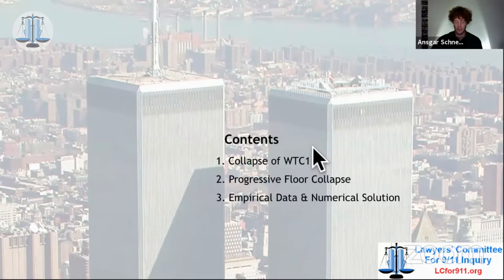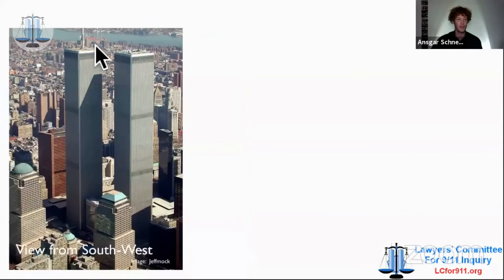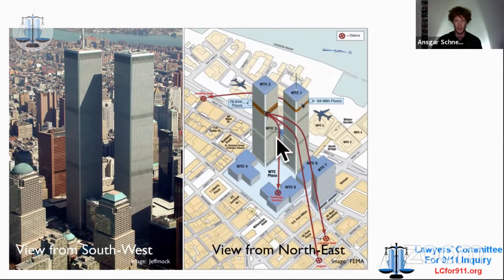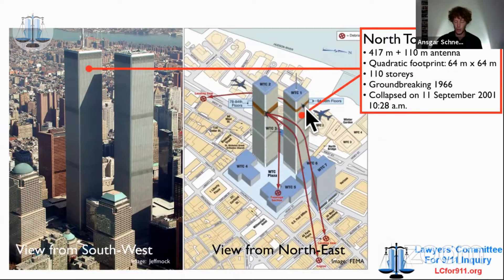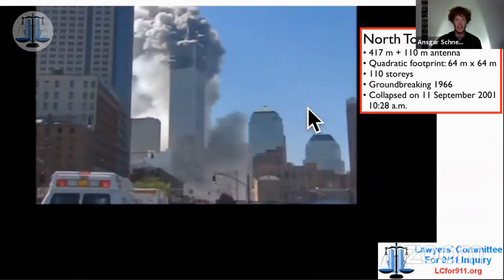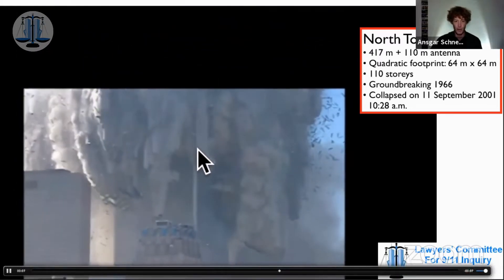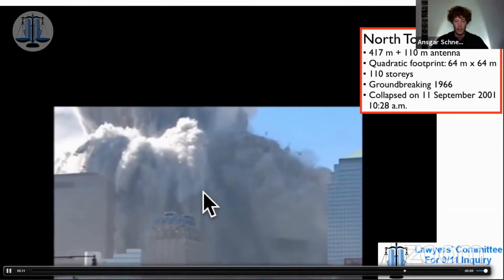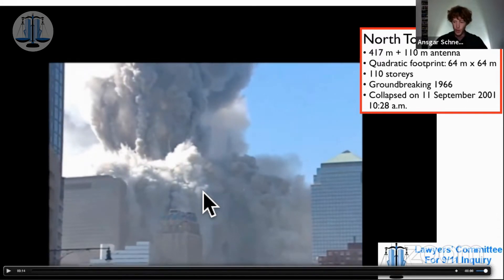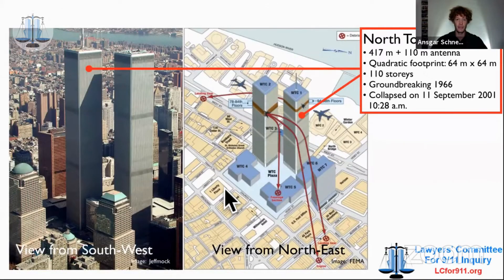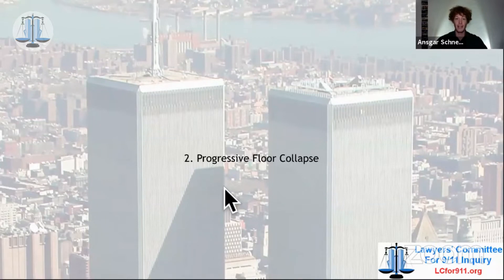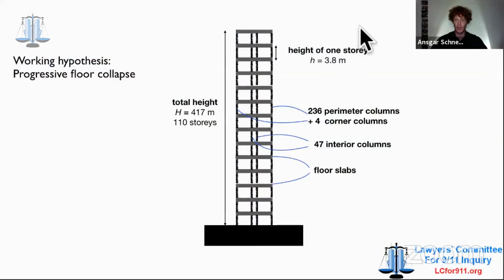You've probably seen it 100,000 times how the North Tower collapsed. The North Tower is one of the Twin Towers with this large antenna on top. Here you see it from the southwest, and here you see it from the northeast. I'm going to show you a clip, and I want to note that in the beginning, in the first seconds of the clip, you can see the roof line, and then later on you can still see the crushing front. Here you see the roof line, and here you see the crushing front moving down. These two observations will be important later. I will now explain a physical model of what might have happened to this building, namely that the collapse followed a progressive floor collapse.